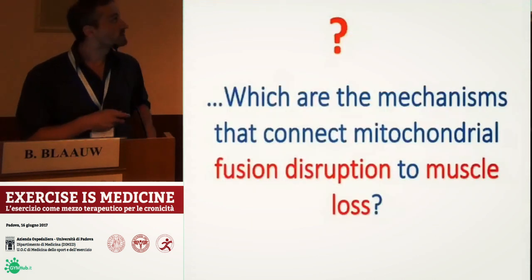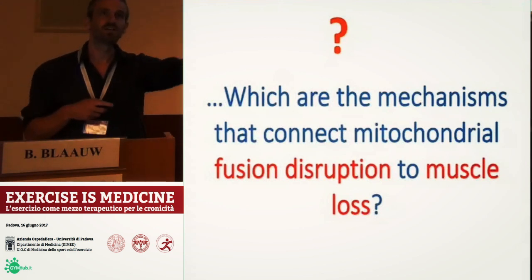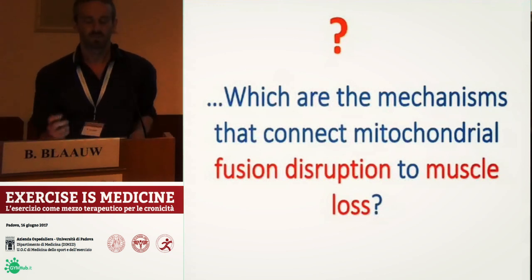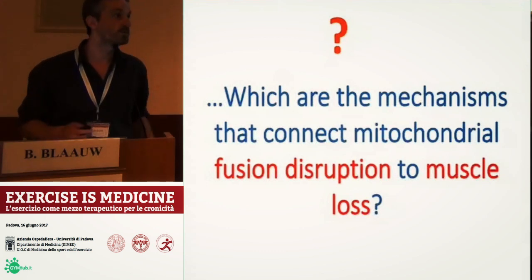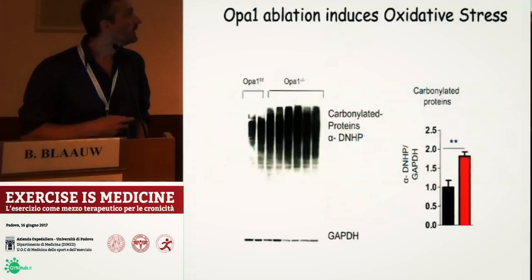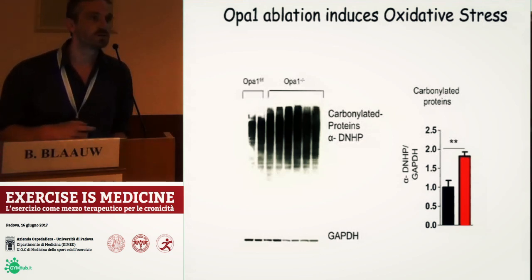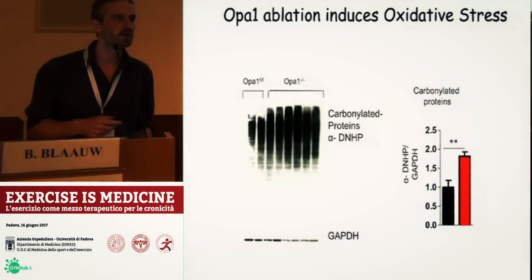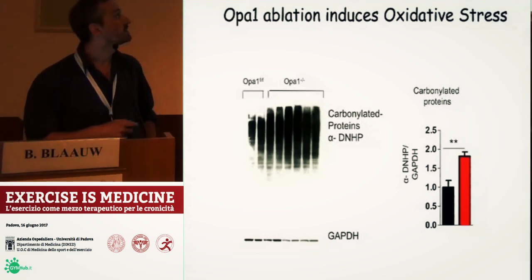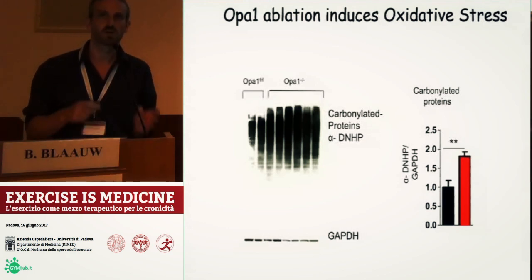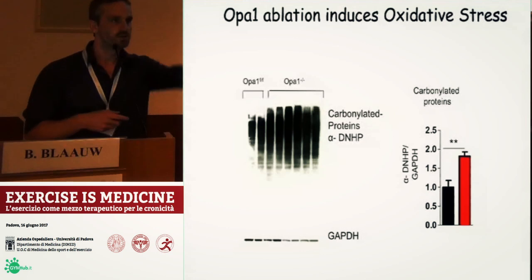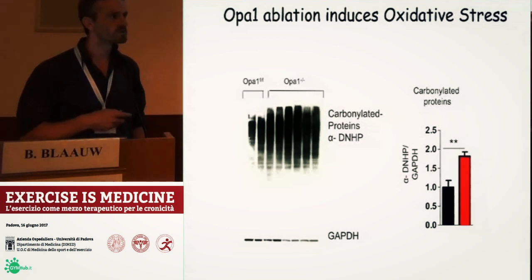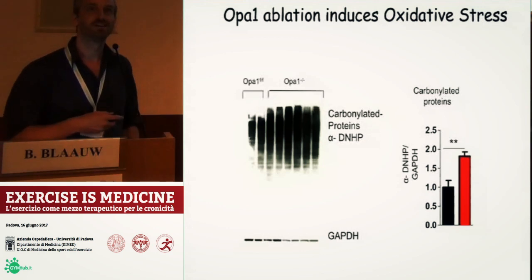So in which way can deletion of OPA1 lead to muscle wasting? Clearly mitochondrial dysfunction has many effects on the cell, and we examined many different aspects of muscle physiology. One of the main things which stood out was oxidative stress. When we take away OPA1 and have mitochondrial dysfunction, what we found was there are a lot more proteins which are carbonylated — a modification indicative of an increase in oxidative stress. So we wondered: can oxidative stress be the mediator leading to muscle wasting and increased aging?